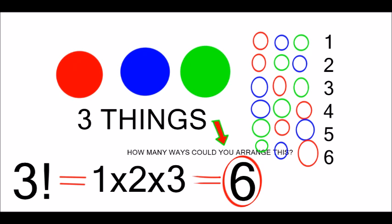By the way, you can't do factorials for negative numbers, because you can't have negative things unless you count them as positive. Know what I mean?